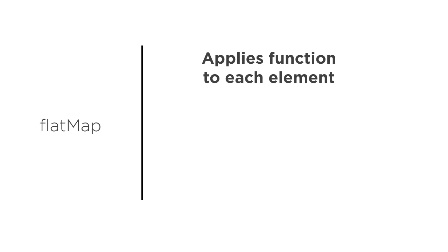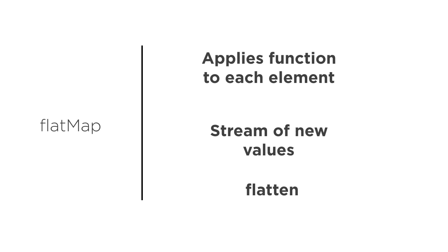Flat map, on the other hand, also takes in a function which it applies to stream elements. But instead of returning one value, it returns a stream of new values. Its main use is to flatten the elements of the input stream. So if you have a stream of streams of string values, then flat map can reduce it to a single stream of values after applying the mapping function.